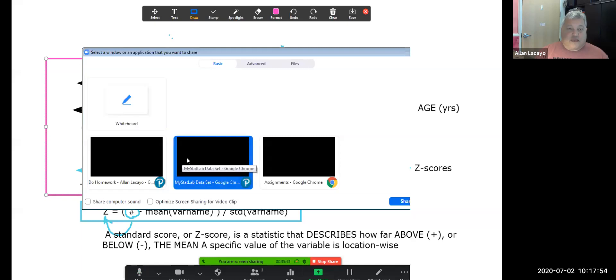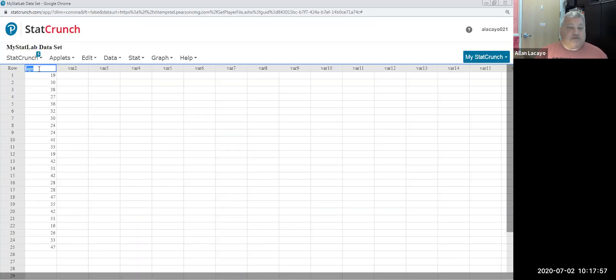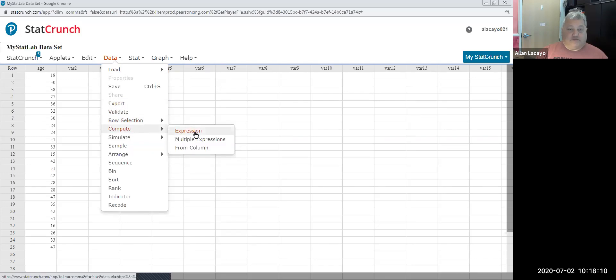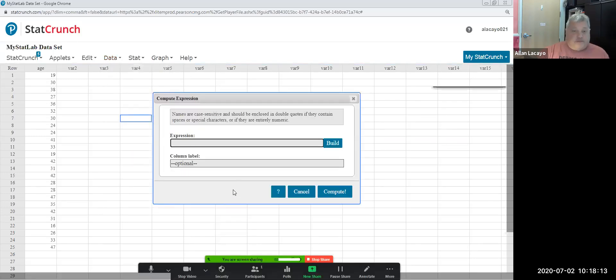So here's how we do that in StatCrunch. We would open a variable. In this case, I changed the name to age for this column, and I'm going to use the most generic way of calculating z-scores first. So I'm going to go Data, Compute Expression. And in this case, I'm going to open up parentheses, type the word age. So what I'm telling the software when I type the word age is to look at each and every one of those 25 variable values.